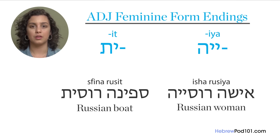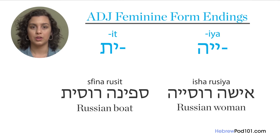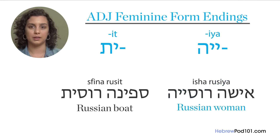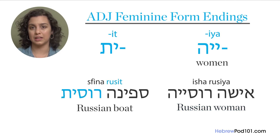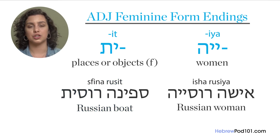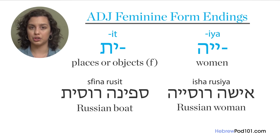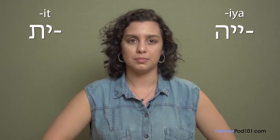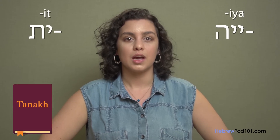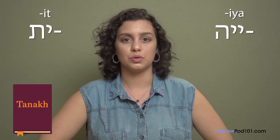Both forms of these adjectives are commonly used, but in different contexts. Usually the ending '-ya,' like in 'russiya' (Russian woman), is used to refer to a woman, while the ending '-it,' like in 'russit' (Russian boat), is used to describe places or objects, such as a restaurant, a shirt, or the Russian language. Grammatically speaking, both forms are acceptable. The foundation of Hebrew grammar is the Tanakh, the Hebrew Bible, in which we find both of those forms used for all purposes.